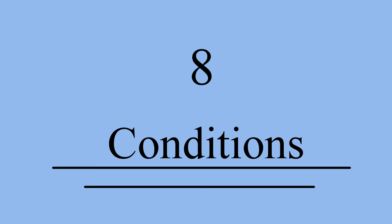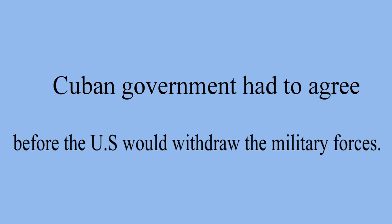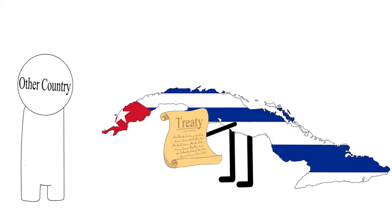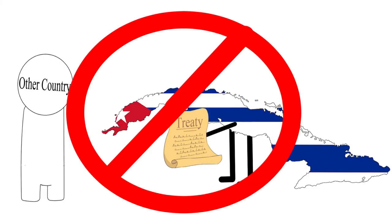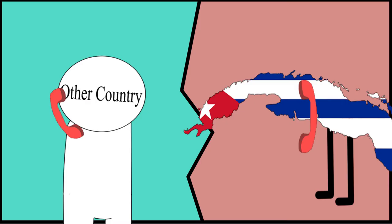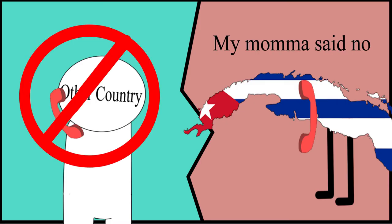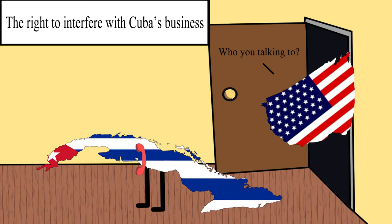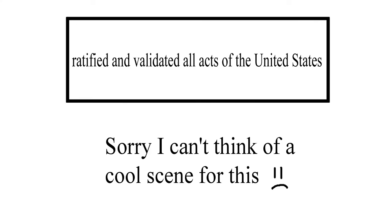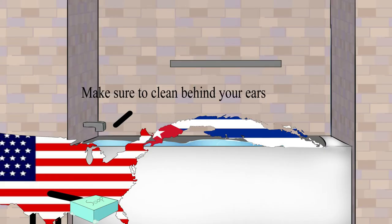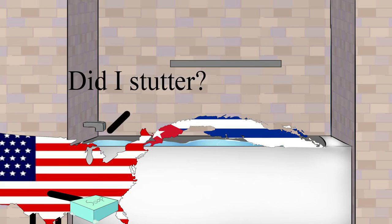The Platt Amendment set eight conditions that the Cuban government had to agree to before the U.S. would withdraw its military forces. One condition was that Cuba was not allowed to sign treaties with any foreign countries. Another was that foreign countries were not allowed to occupy Cuba for military purposes. It also gave the United States the right to interfere with Cuba's business, and ratified all acts of the United States in Cuba during its military occupancy.